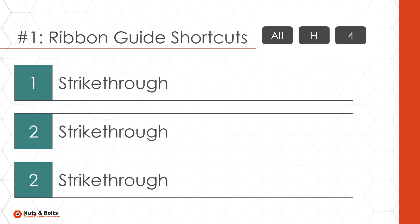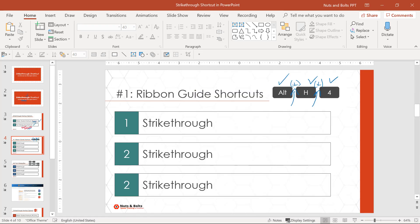The first shortcut is just your Alt H 4 keyboard shortcut. Notice there is no plus sign in between these — that is the key distinction of a ribbon guide shortcut. You do not need to hold these keys down.